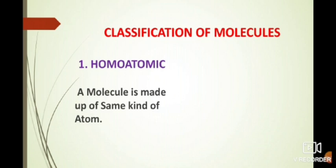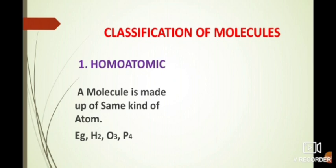A homoatomic molecule means a molecule made up of the same kind of atoms — that is, similar kind of atoms — is known as a homoatomic molecule. For example, hydrogen H2, ozone O3, and phosphorus P4. All of them are made up of the same or similar kind of atom.